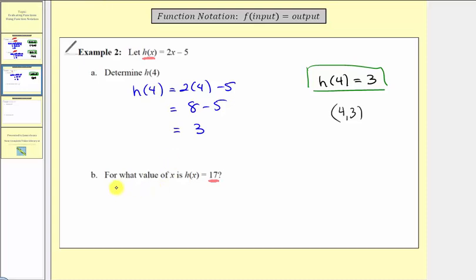We would have 17 equals two x minus five. And we add five to both sides. So this would be zero, so we have 22 equals two x. Divide both sides by two. Simplifying, we have x equals 11.